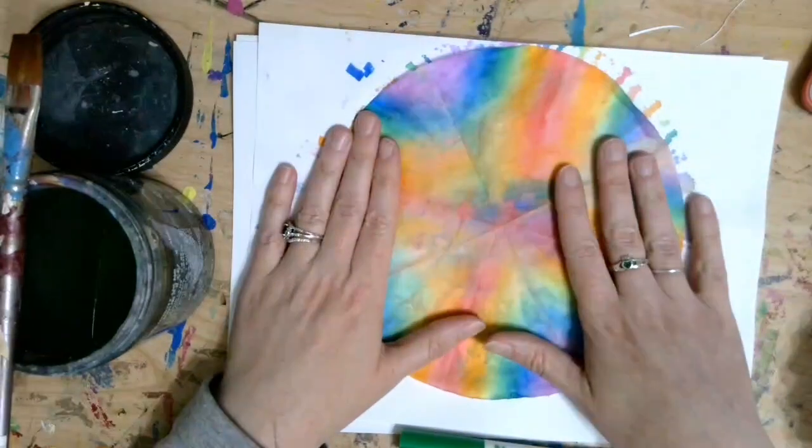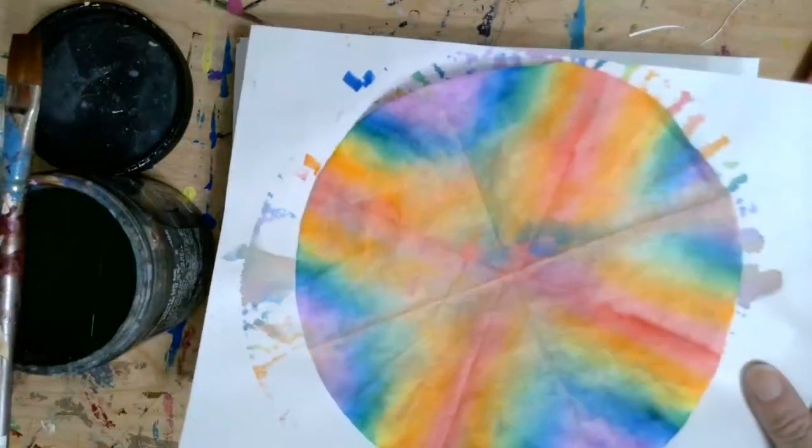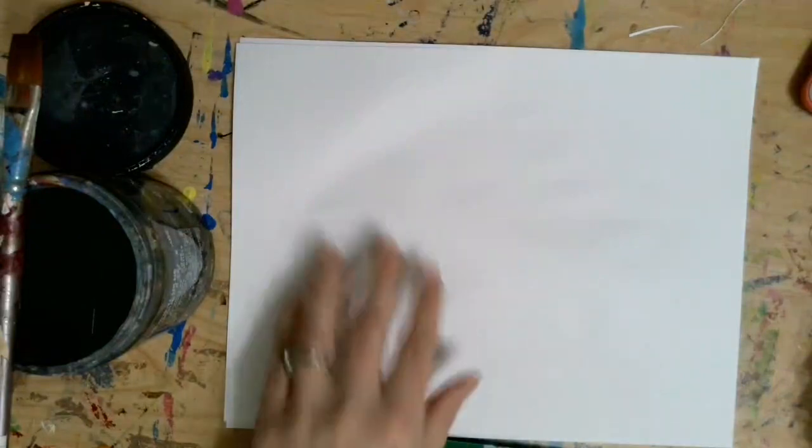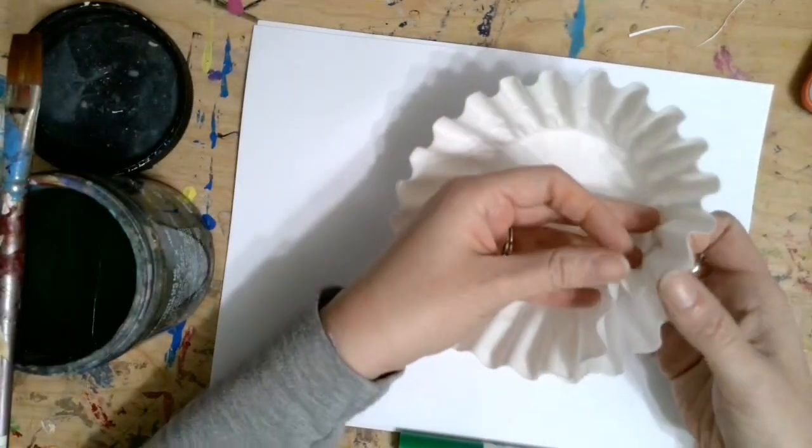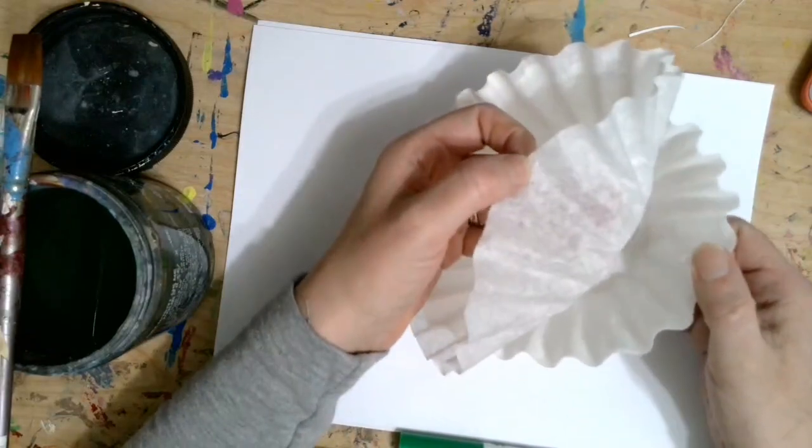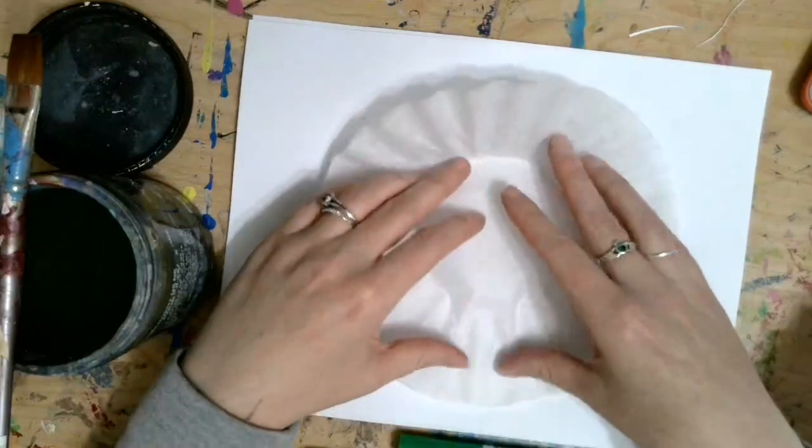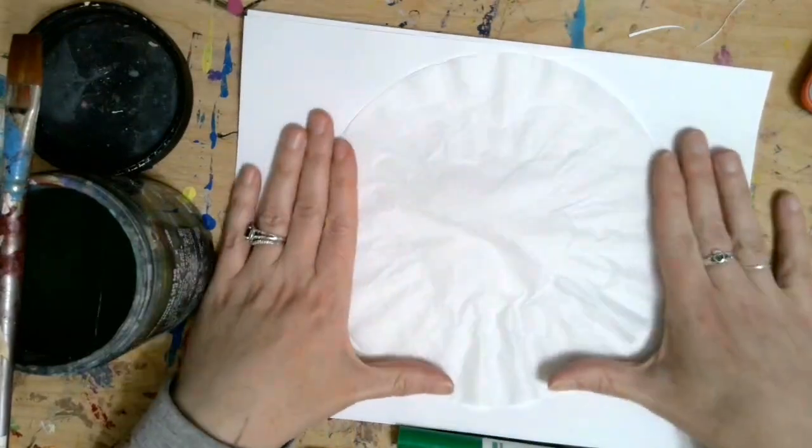All right so let's get started on making one of these radial symmetry designs. So I have my copy paper down. I'm going to use a coffee filter. You want to make sure that you peel it apart so you only have one. We want this to be kind of thin. And I'm going to kind of flatten out my coffee filter like this.